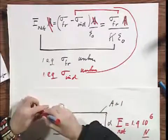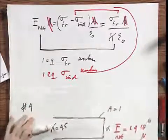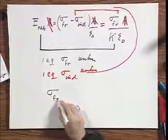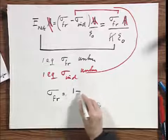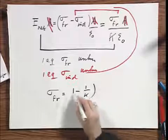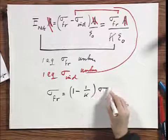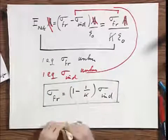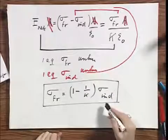So now you can solve for sigma induced. If you want to combine them in a clever way, if you like that, it's easy to prove that sigma free equals one minus one over K times sigma induced. Don't try to remember that, but that's what will follow from these results.